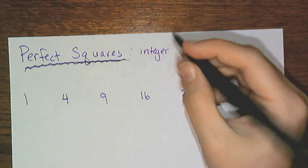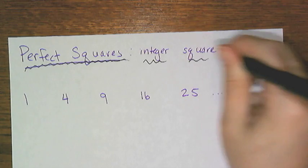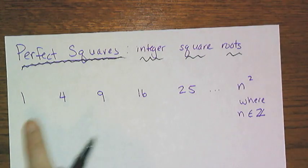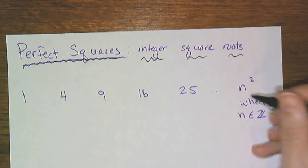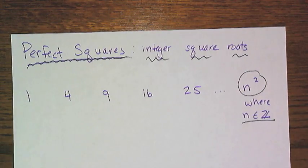And a perfect square is basically a number that has integer square roots. So for example, 1, 4, 9, 16, 25. Basically any number of the form n squared, where n is an integer.